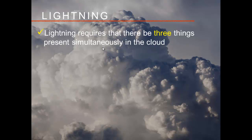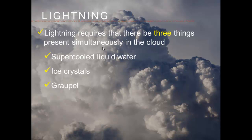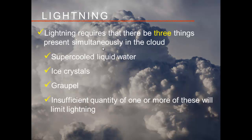Lightning requires three things simultaneously in the clouds: supercooled liquid water, ice crystals, and graupel or soft hail. All three need to be present at the same time. If there's insufficient quantity of one or more, that limits the ability to produce lightning. Low-top convection — roughly 25,000 feet or lower — may not have enough ice crystals or graupel to produce lightning. But that does not mean that cloud isn't dangerous. It certainly could be.